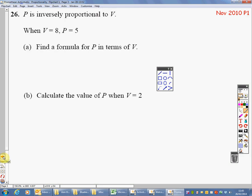P is inversely proportional to V. So when I read that, the first thing I'm going to do is write down that P is inversely proportional, so 1 over V. I can rewrite that as P equals K times 1 over V or P equals K over V. And I prefer this one for my workings out.